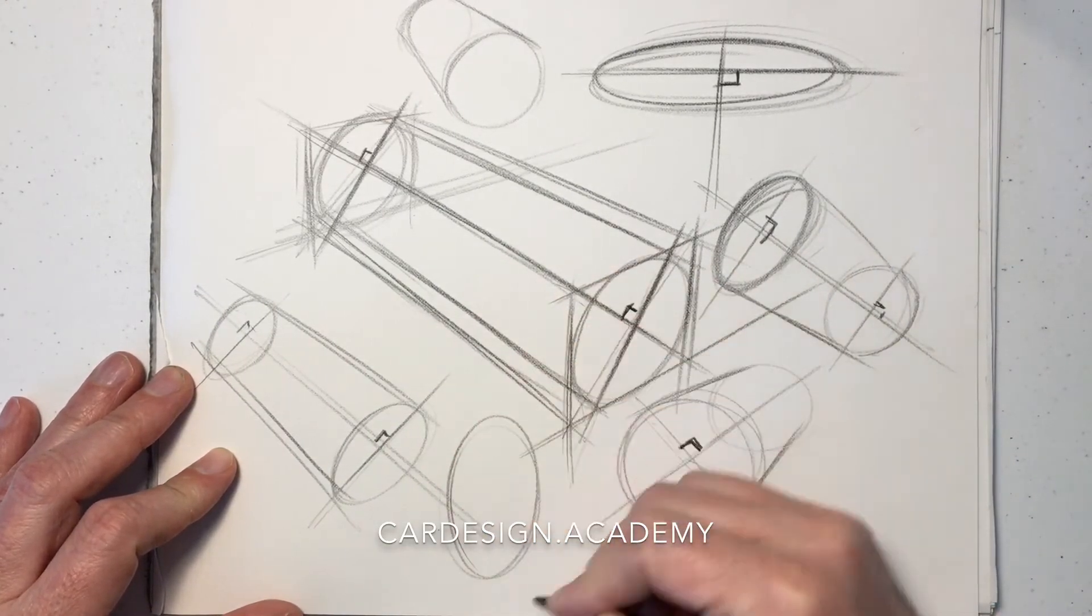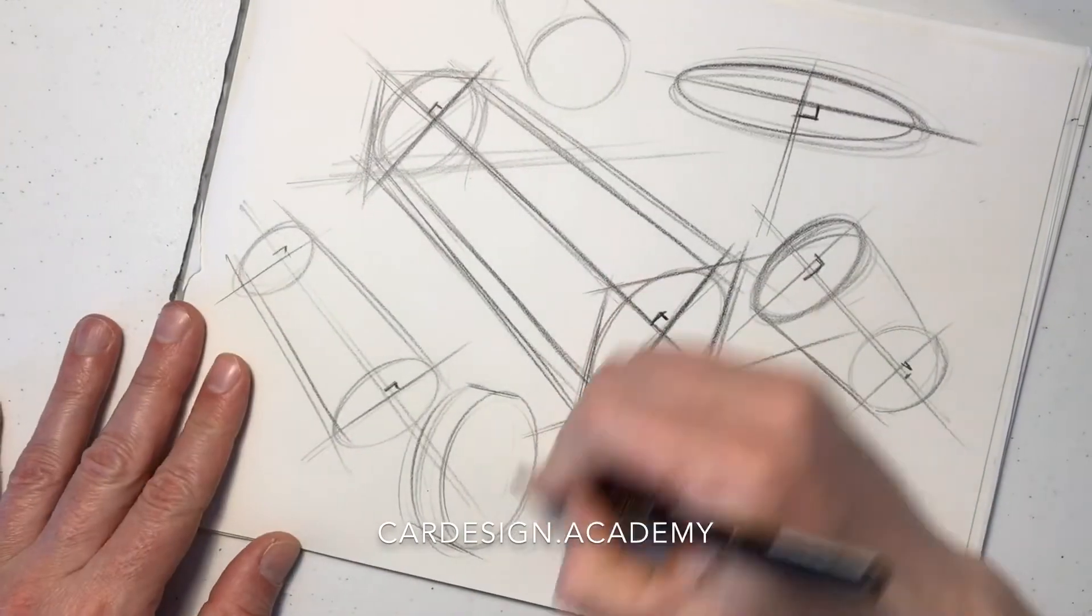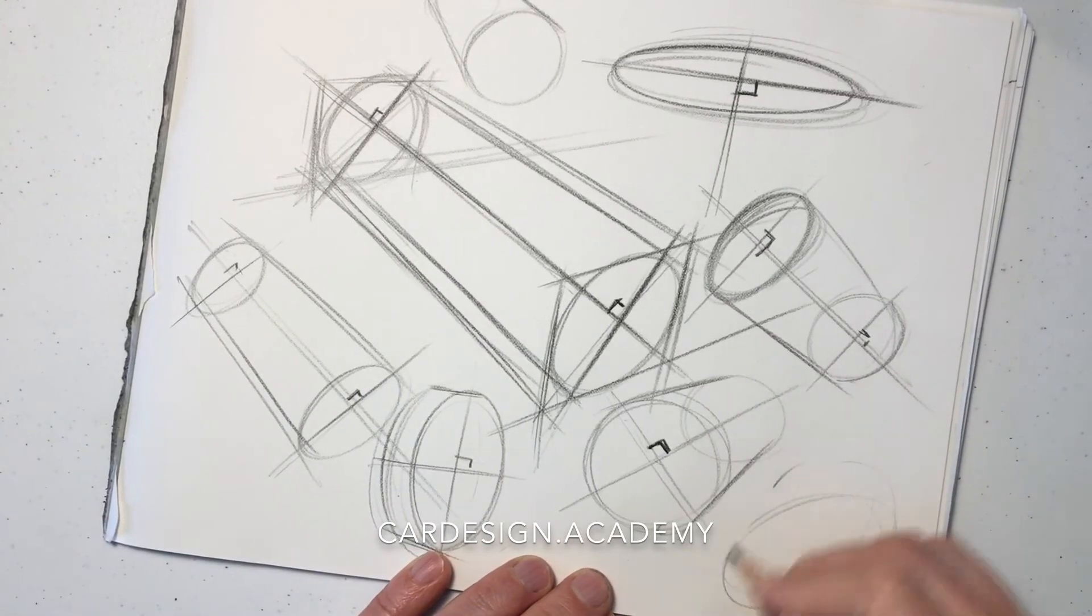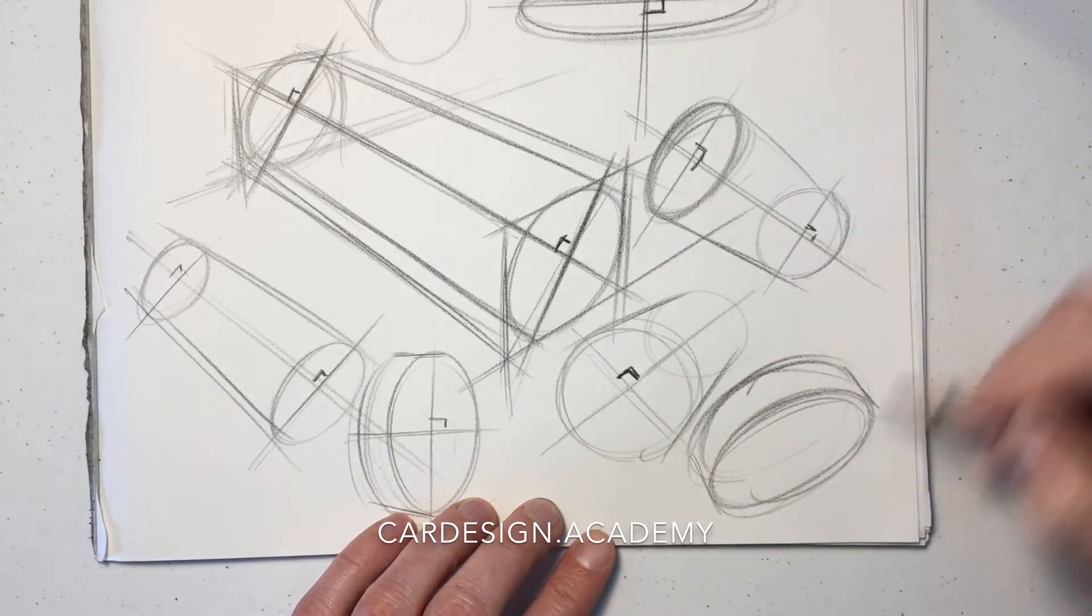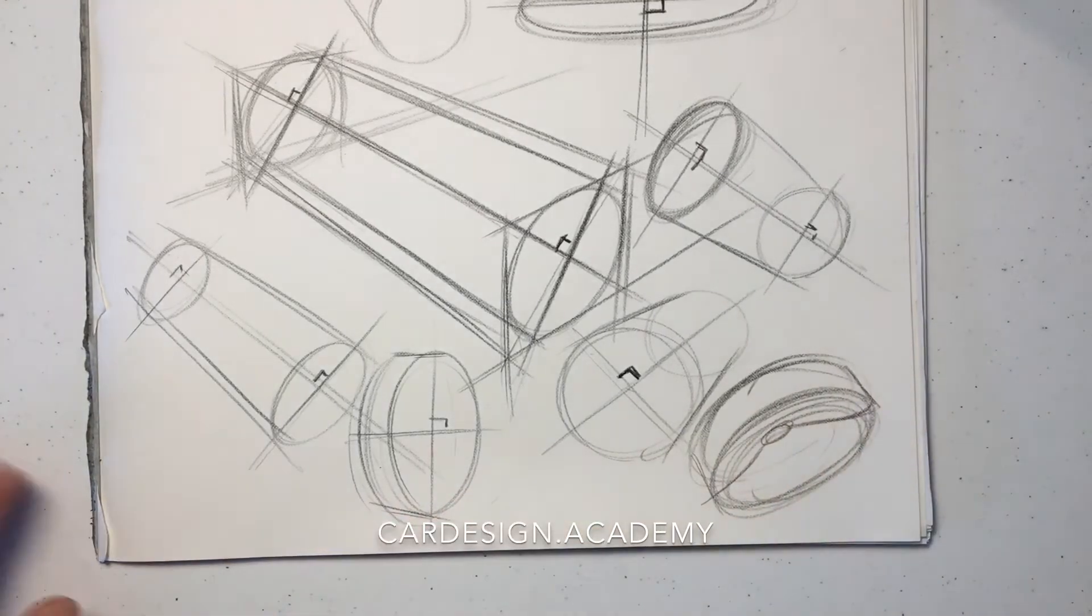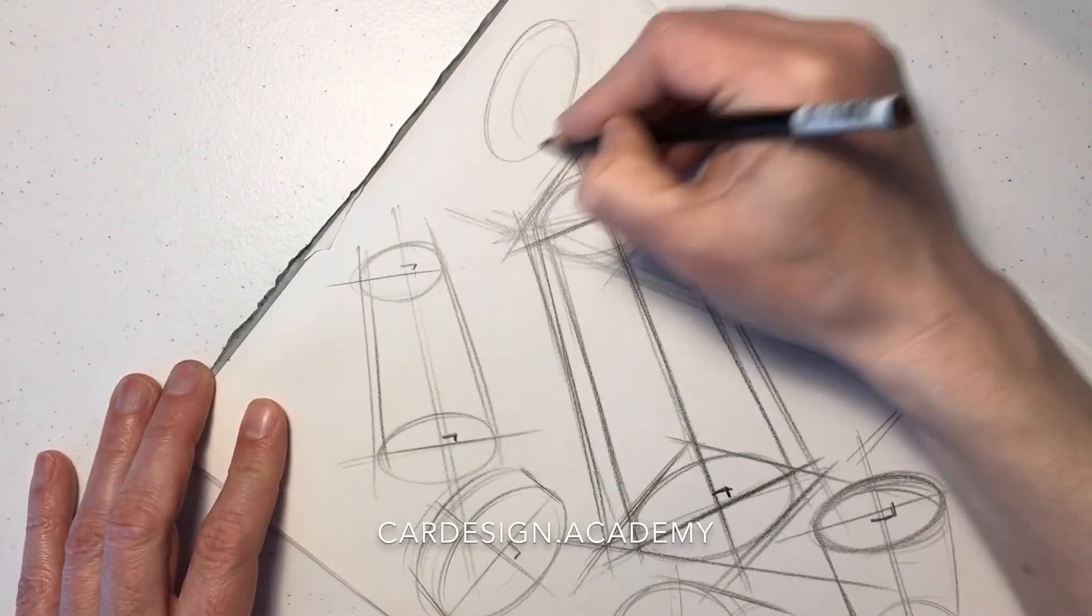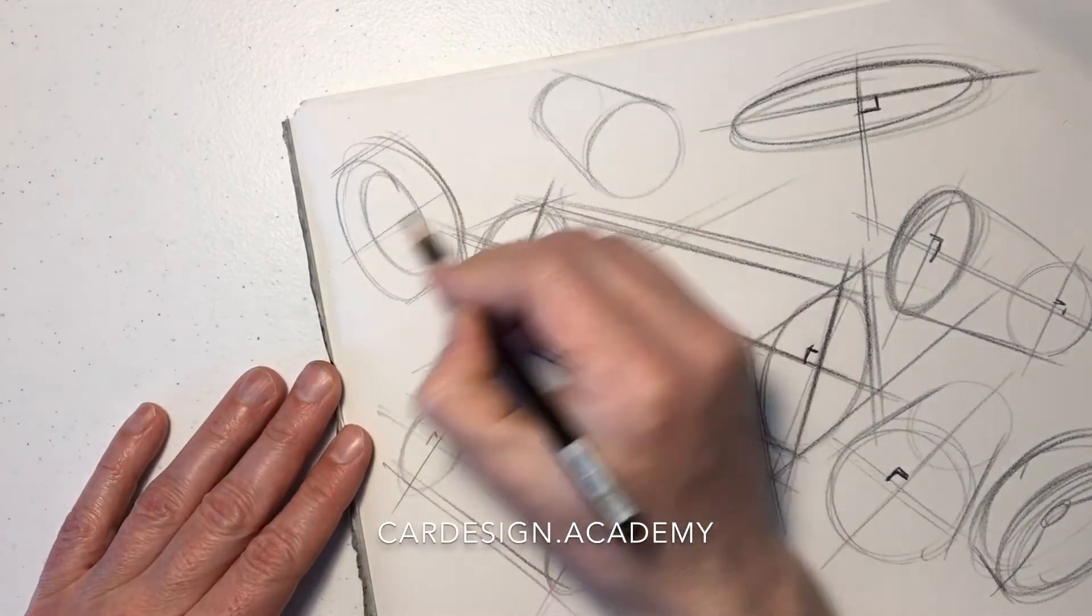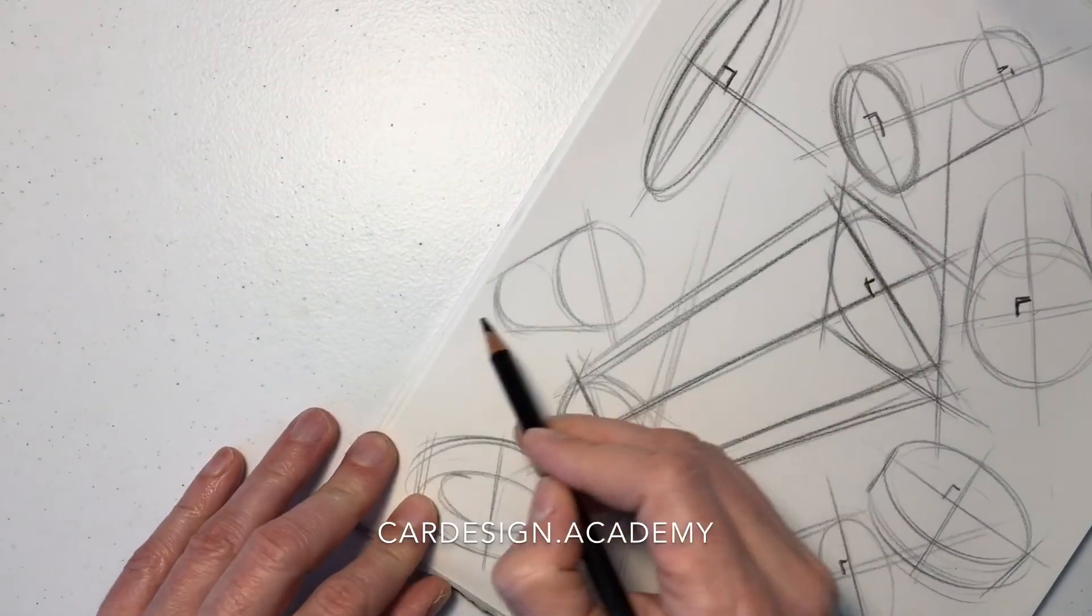As you get better, you'll see you don't need to draw the box every time. But it really does help to set things up. You can draw shorter cylinders. That might represent a single tire. Just keep practicing. This is probably the single most important skill any car designer needs to have. And you'll see as we begin to draw entire vehicles how all of this comes together.